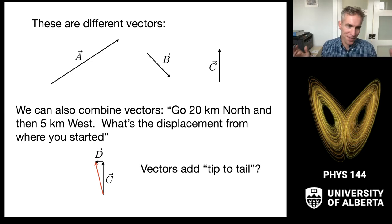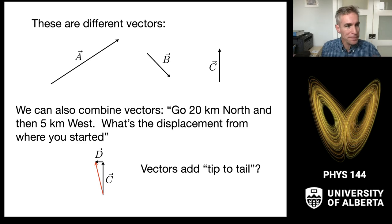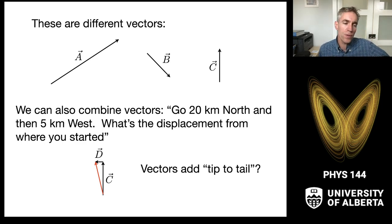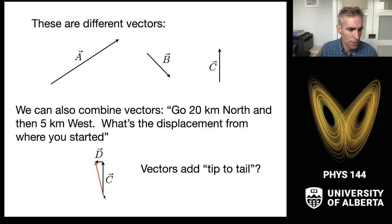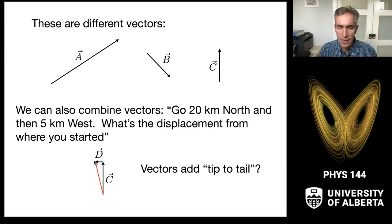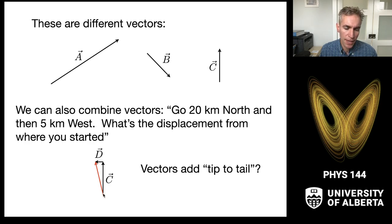These are all different vectors: A, B, and C all have different lengths and different orientations. They can have the same length in different orientations and still be a different vector. We can combine vectors by adding them tip to tail. So if I told you to go 20 kilometers north and 5 kilometers west, you can figure out where you are by adding those vectors — drawing the first vector, then starting the second vector from the tip of the first. I measure from the tail of the first vector to the tip of the last vector, and that is the resulting vector.